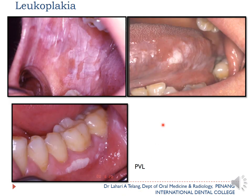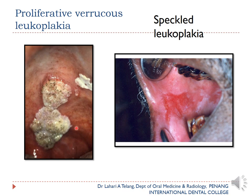Looking at some potentially malignant disorders — leukoplakia presents in three types: the homogeneous cracked-mud white non-scrapable appearance, a slightly raised thicker non-homogeneous variant, and a very thick plaque-like appearance resembling proliferative verrucous leukoplakia (PVL). More pictures show proliferative verrucous leukoplakia and speckled leukoplakia — a non-homogeneous type with red and white mixed appearance — which is more likely to undergo malignant transformation than simple white leukoplakia.